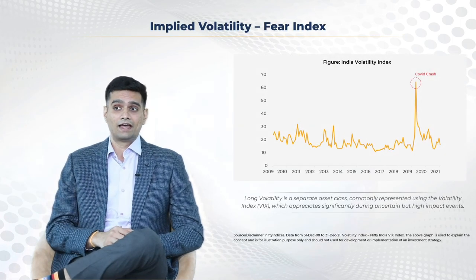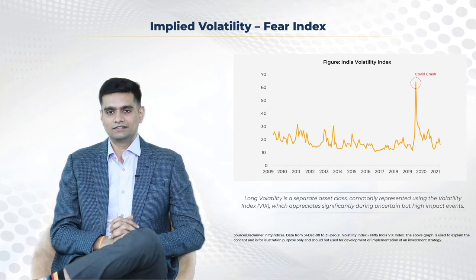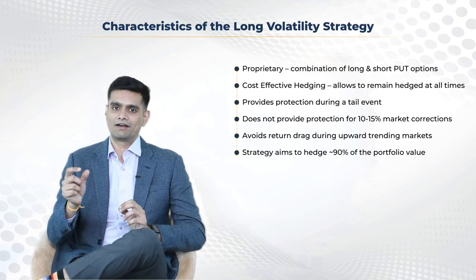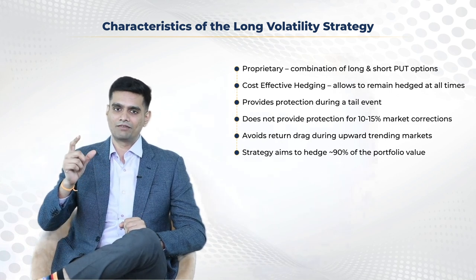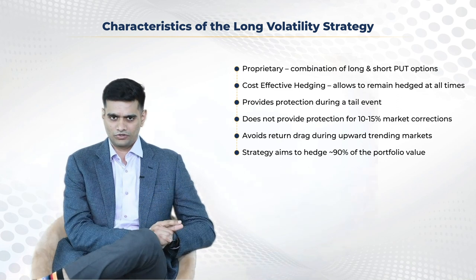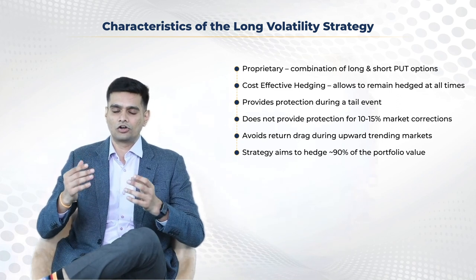There is one thing which predictably moves up whenever there is a market crash, and that is investor fear. This fear is captured through a quantitative indicator called implied volatility, and we are familiar with the instrument that measures this — the VIX index. Unfortunately, there is no way to directly invest in the VIX. The solution is to invest in a portfolio of options, because every option has a component of implied volatility embedded in its price, meaning that with increasing implied volatility, the option price goes up. This acts as a diversifying exposure to your overall equity portfolio, provided you are net long or net buyers of options.